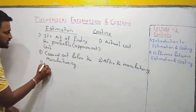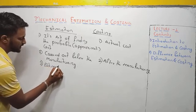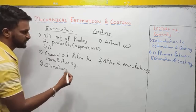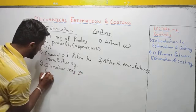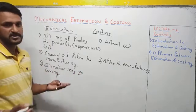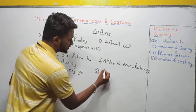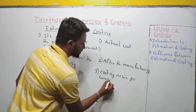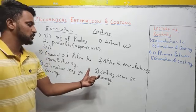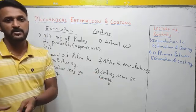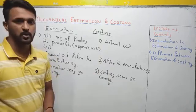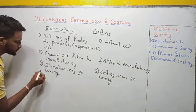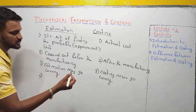Third: estimation may go wrong. If the estimator is not well qualified or has poor experience, the estimation may be an underestimation or overestimation. Fourth: costing will never go wrong because it is simply an addition of bills. The bills are in front of you; when you add them using a calculator, you get the actual cost. That is why costing will never go wrong, whereas in estimation you have to predict things.